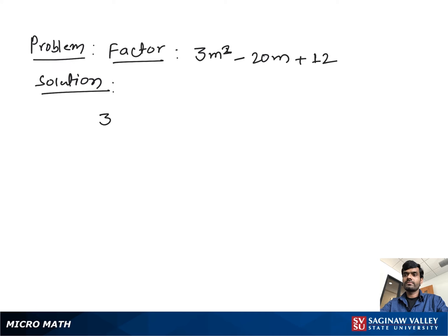Factor 3m square minus 20m plus 12. First, what we do?